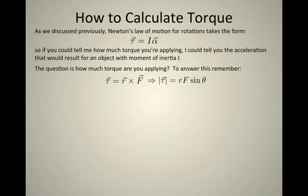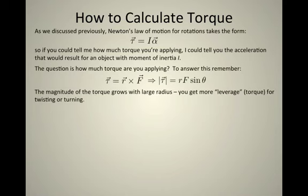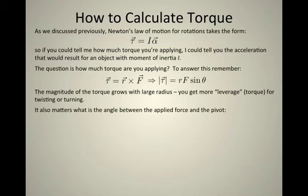We could actually calculate a torque. The magnitude of the torque is r times f times the sine of the angle between those two vectors. So, the torque grows bigger when you try to pull with a force at a large radius. You get more leverage when you're trying to twist or turn something. It also matters what the angle is between the applied force and the pivot.